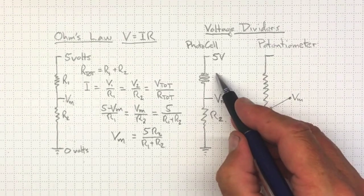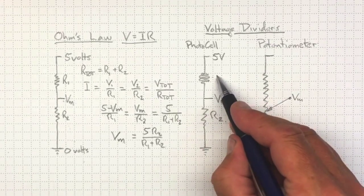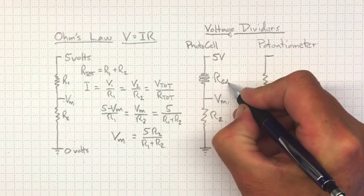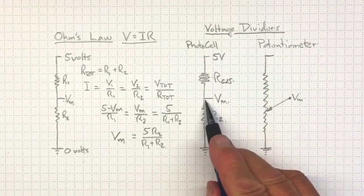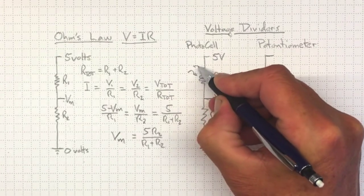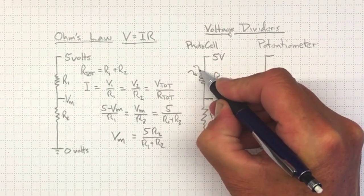So by choosing an appropriate R2 to match the resistance of the cadmium photocell, then we'll be able to get a measured voltage coming out of here that tells us about how much light is falling on that photocell.